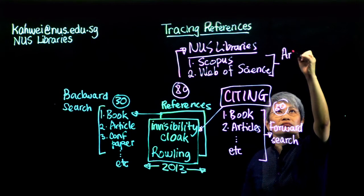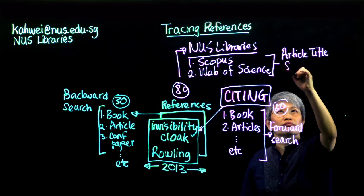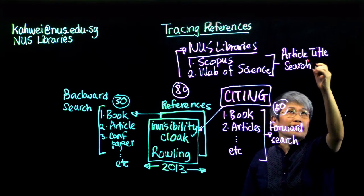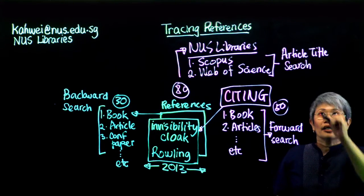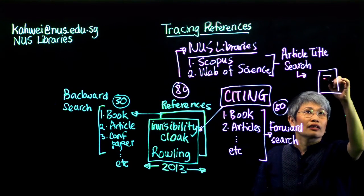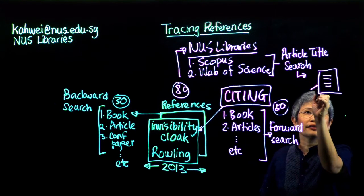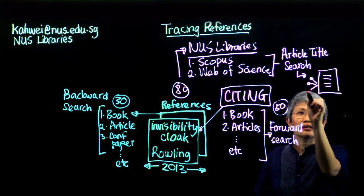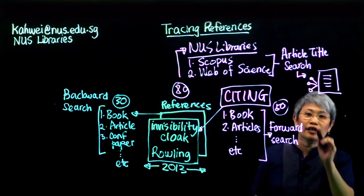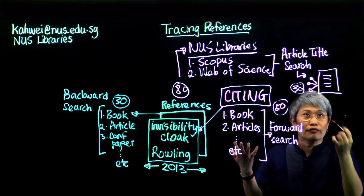In these two databases, try doing an article title search. An article title search is very precise. It would likely bring up one record that is of the Invisibility Cloak. And in that record, you would find hyperlinks to those 30 references very easily and clickable, of course.